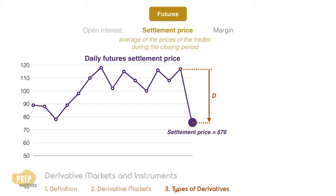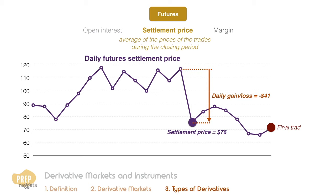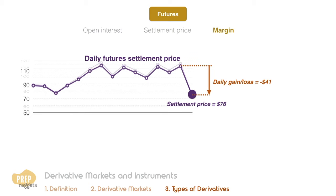This specification of the settlement price reduces the opportunity of traders to manipulate the settlement price. The settlement price is used to calculate the daily gain or loss at the end of each trading day. On its final day of trading, the settlement price is equal to the spot price of the underlying asset.